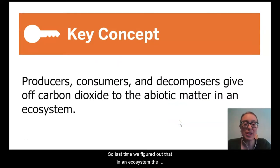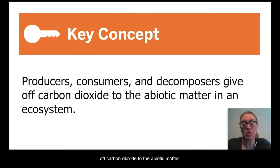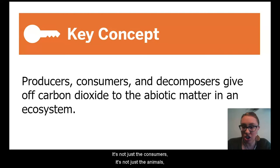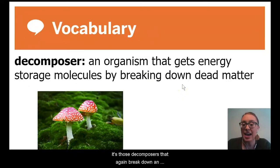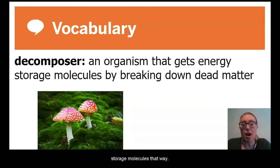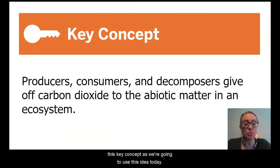Last time we figured out that in an ecosystem, the producers, the consumers, and the decomposers all give off carbon dioxide to the abiotic matter. It's not just the consumers, not just the animals. It's the animals, the plants, and the decomposers that break down an organism that is dead or dying and gets its energy storage molecules that way. Please pause the video and record this key concept, as we're going to use it today.